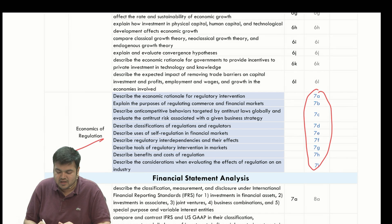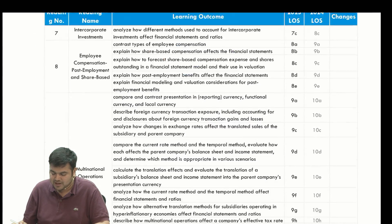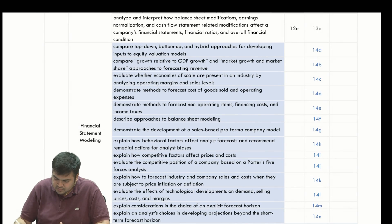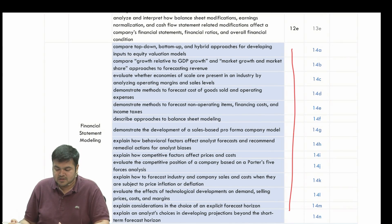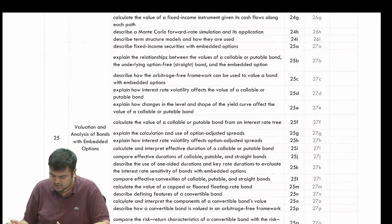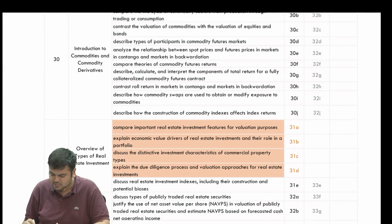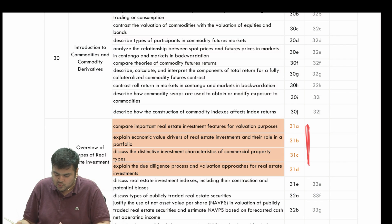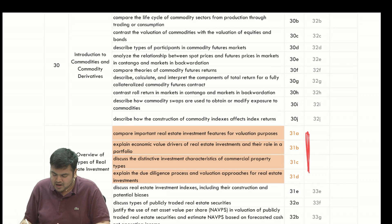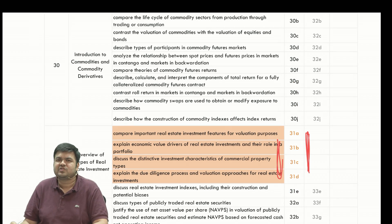Chapter 7, Economics of Regulation, has been entirely deleted. This is the LOS-wise breakup in detail. Chapter 9 has now become Chapter 10 because one chapter was deleted before it — so 9F is now referred to as 10F. Financial Statement Modeling is entirely deleted as it has been shifted to Level 1. For real estate, all the chapter mapping is given — the earlier real estate LOSs have been deleted and the new LOSs on different types of real estate investment have changed. The chapter is a total revamp.